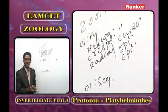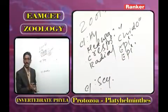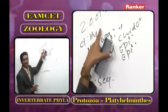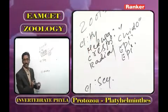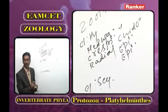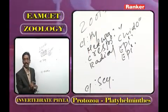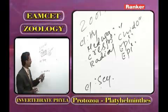Examples for class Hydrozoa: Hydra, Obelia, Physalia, and Halistema.